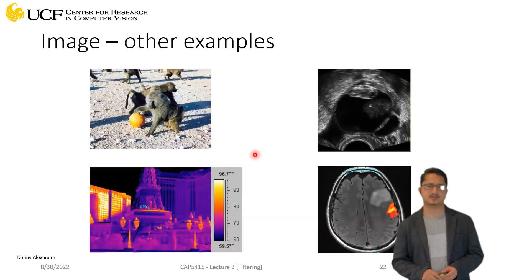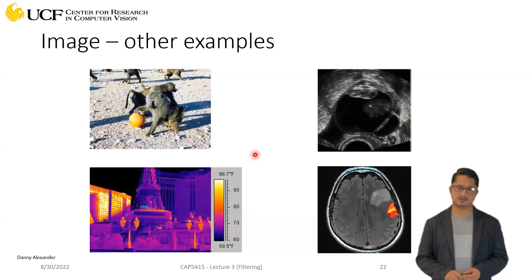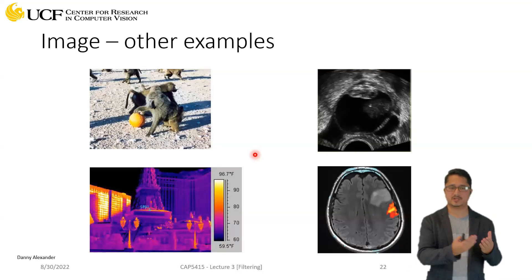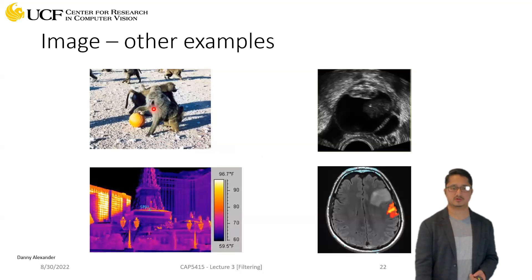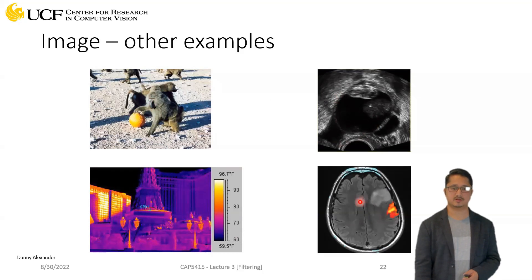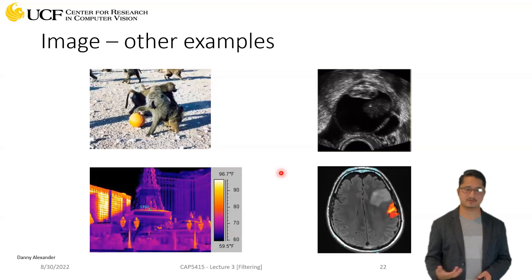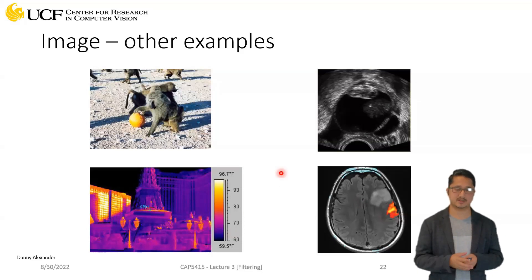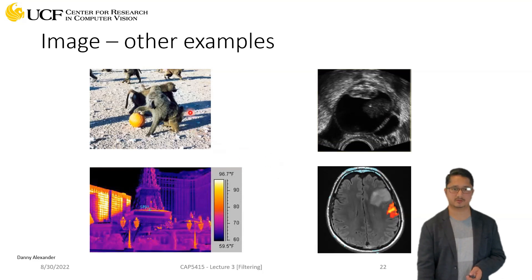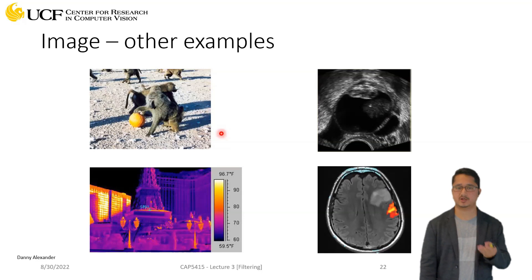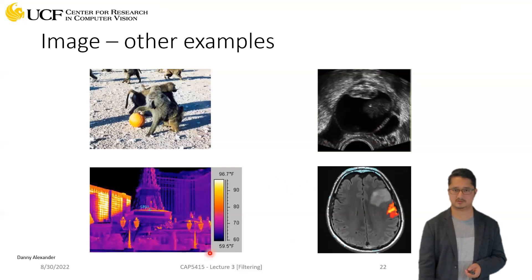One final important point: images are not just regular photographs captured by a camera. When doing computer vision, you might work with standard RGB images, but also with ultrasound, MRI, and infrared images — different modalities that can all be represented as images. When developing algorithms, they may need to operate not just on natural images but on these other types as well.